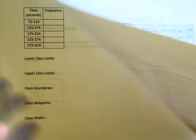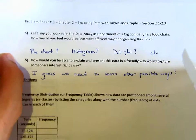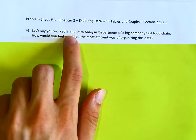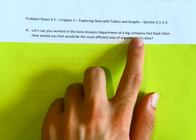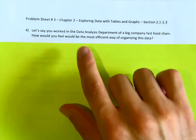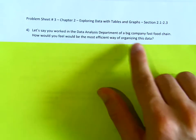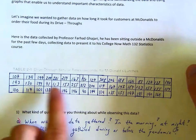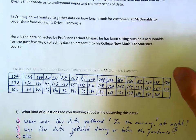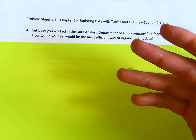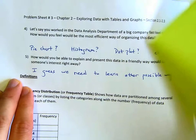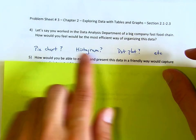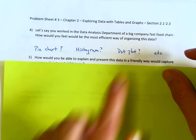For question four: let's say you worked in the data analysis department of a big fast food chain — how would you feel is the most efficient way of organizing this data? Right now it doesn't look very enticing — we just have a bunch of numbers. Is there a way to express it in a nice and pleasant way? What would you do — a pie chart, a histogram, a dot plot?